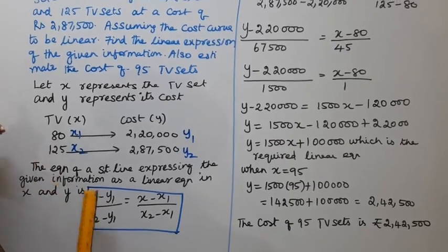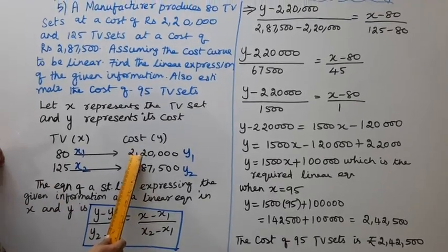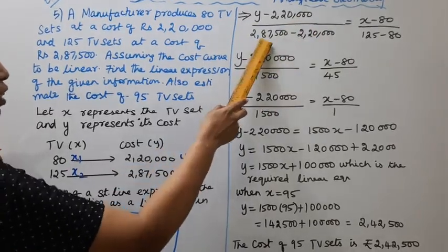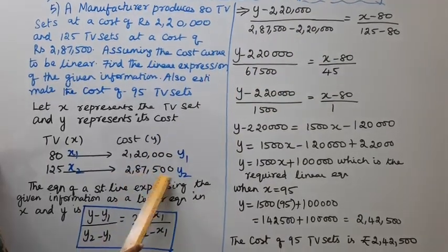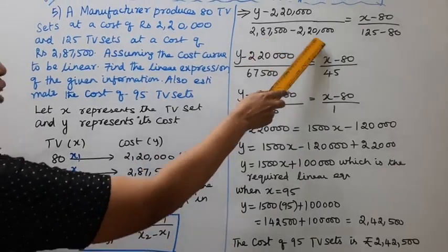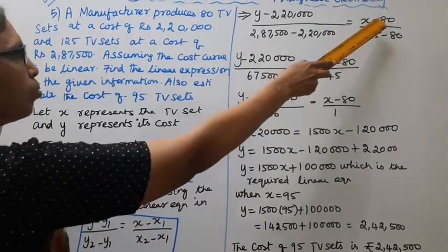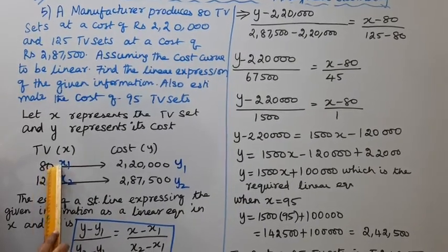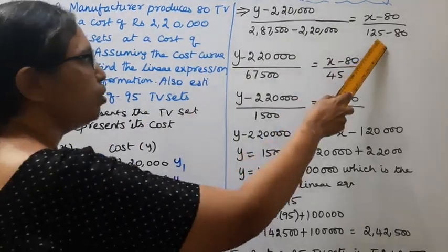...divided by y2 minus y1, which is 2 lakh 87,500 minus 2 lakh 20,000, equal to x minus x1, which is x minus 80, divided by 125 minus 80.